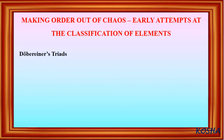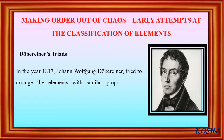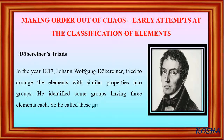Dobereiner's Triads. In the year 1817, Johann Wolfgang Dobereiner tried to arrange the elements with similar properties into groups. He identified some groups having three elements each, so he called these groups as triads.